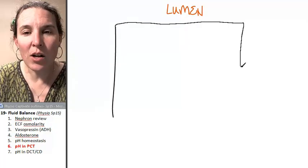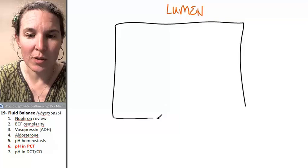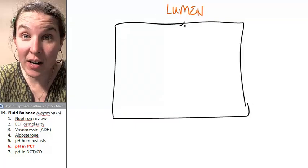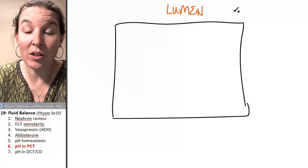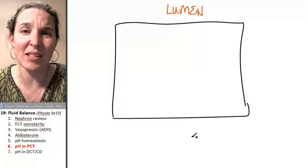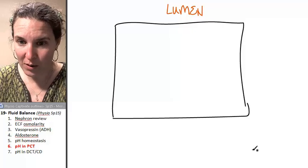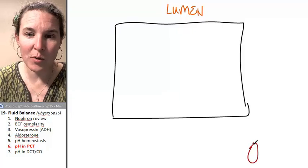So what do we know about proximal convoluted tubule cells? We know that they have a high surface area full of microvilli on the luminal end. I'm not drawing all that stuff on there. We also know that ultimately, if we are going to reabsorb something, we want to send it into the blood.